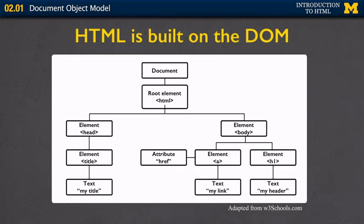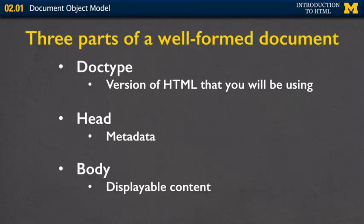If we don't look at it as a picture, I can also kind of just tell you that every tree has three parts to a well-formed document. The doc type, which is the version of HTML that you're going to be using. The head, which is all of the metadata, or kind of extra information. And the body. The body is the displayable content. The thing that most people are going to get back when they do the request response cycle.